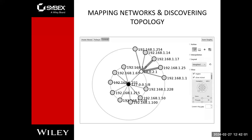Here's a good example of a network mapping tool. It could be Maltego or Network Mapper. Basically, it has gone out and done a ping sweep or some other type of low-level scan — maybe an ARP scan — and found the different devices on the network.